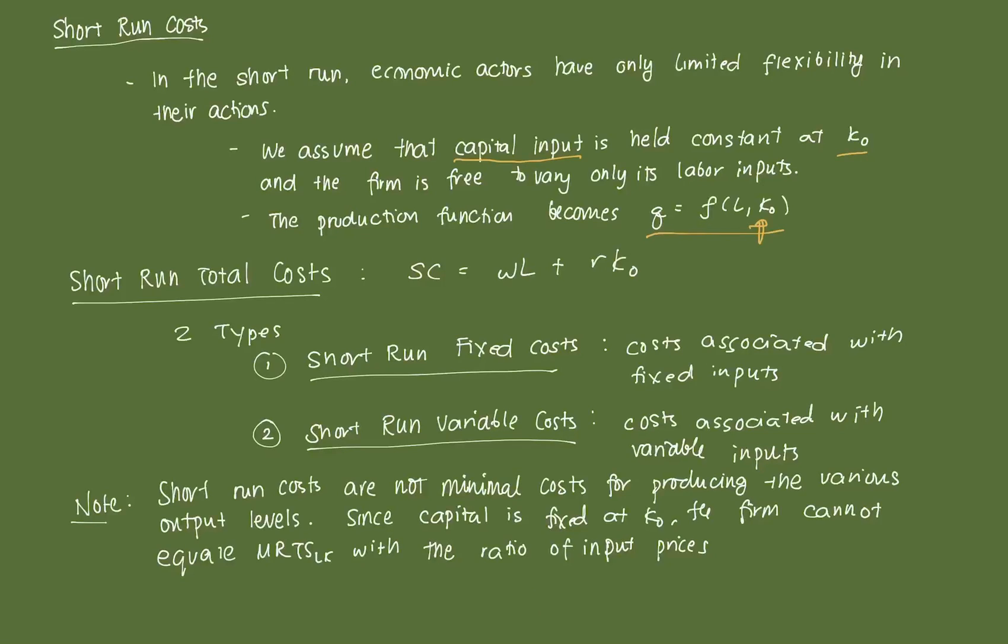Now that we know this is the production function, we can visualize how its cost function would look like. The short-run total cost function is essentially equal to WL plus RK-naught, where K-naught is fixed. Inside the short-run total cost, there are two types of costs. In the short-run, we have fixed inputs. The first type is called short-run fixed costs, which are costs associated with fixed inputs. In this case, our input that is fixed is RK-naught. This portion of the cost is the short-run fixed cost.